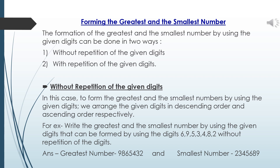Let's understand with an example: write the greatest and the smallest number using the digits 6, 9, 5, 3, 4, 8, 2 without repetition. For the greatest number, arrange in descending order: 9, 8, 6, 5, 4, 3, 2. For the smallest number, arrange in ascending order: 2, 3, 4, 5, 6, 8, 9.